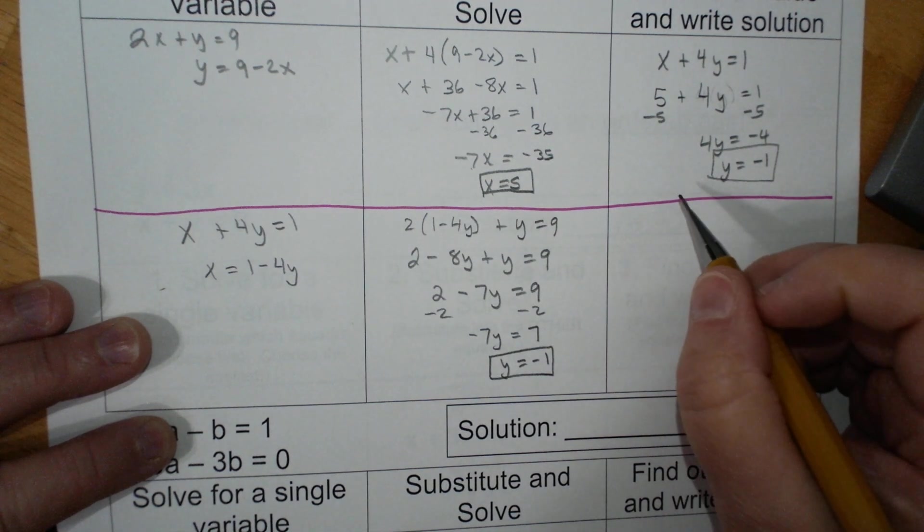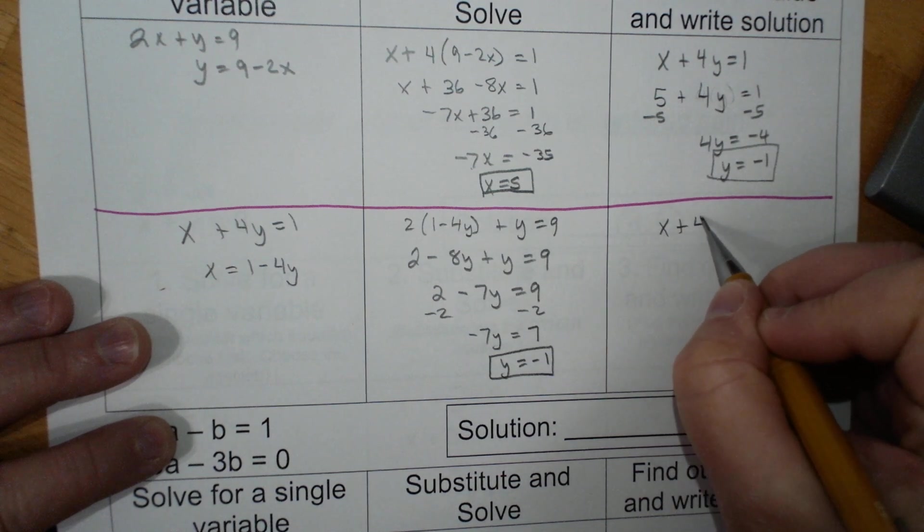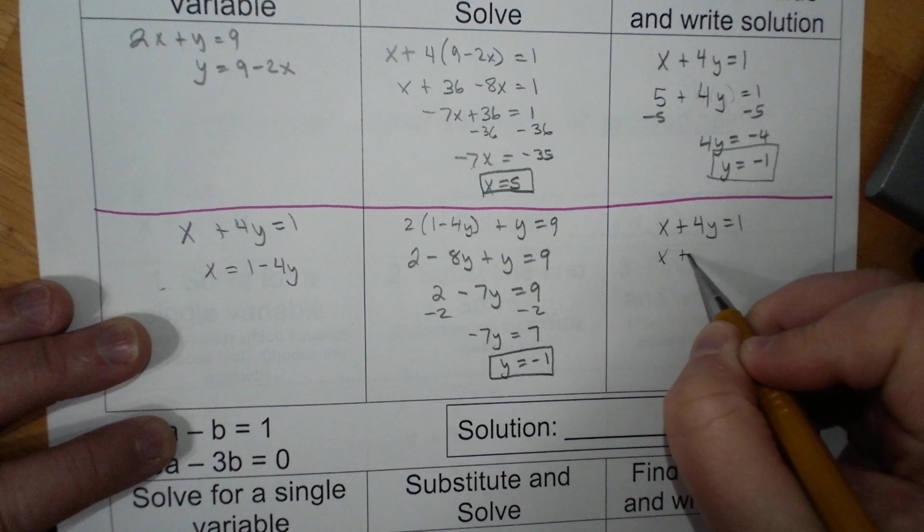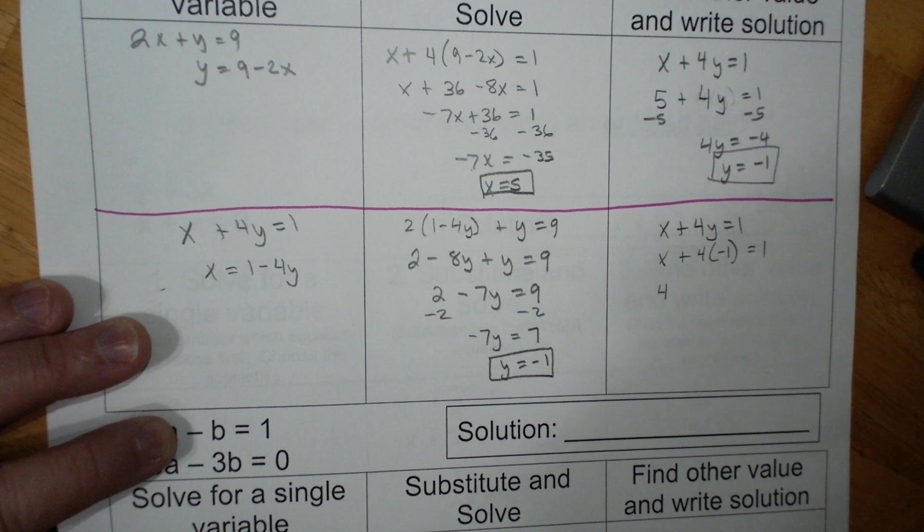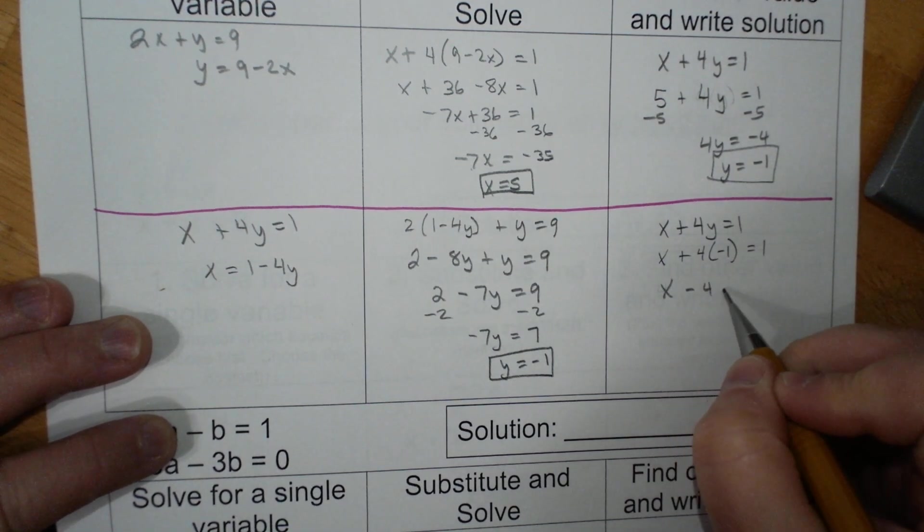I like the bottom equation still. x plus 4y equals 1. x plus 4 times negative 1 equals 1. Oh sorry, x minus 4 equals 1. Add 4, add 4, x equals 5.